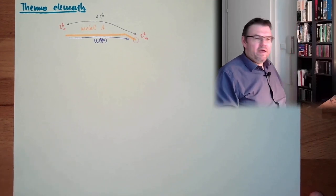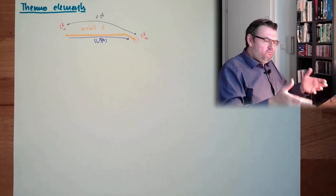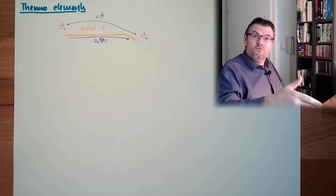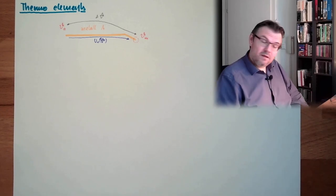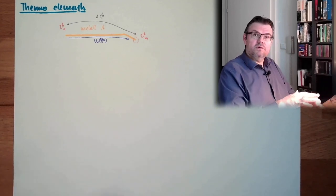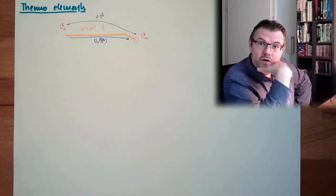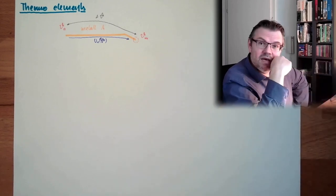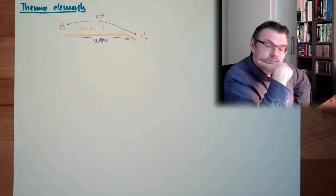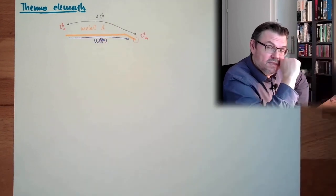He realized this by accident. He saw some wires and one end of the wire got very close to a candle, the candle got hot. And he saw, he has a compass next to it and he saw the compass moving. So he thought it's a thermo-magnetic effect, but this is a thermo-electric effect.